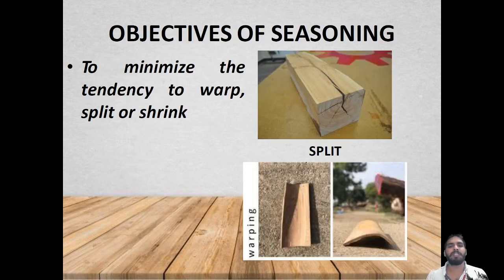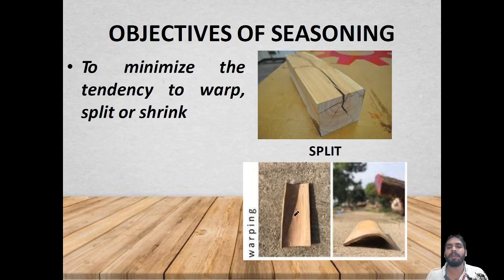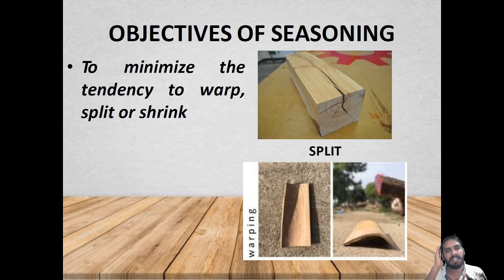Then objectives of seasoning — why it is done? It is done in order to minimize or decrease the warping tendency, splitting tendency, or shrinking tendency.